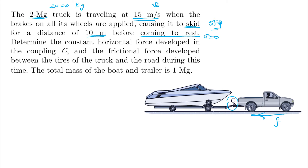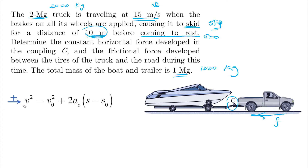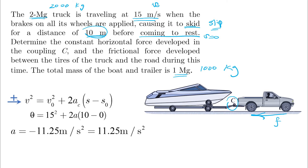The total mass of the boat and the trailer is 1 megagram, which is 1,000 kg. From what's given in the problem, we can find the acceleration of the system. By having the initial velocity, the final velocity, and the distance, we find that the acceleration is minus 11.25 meters per second squared — or 11.25 meters per second squared in the opposite direction — which is correct because the system is slowing down, i.e., we have a deceleration.